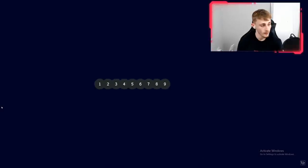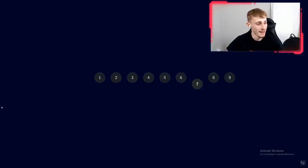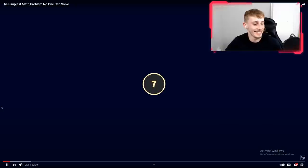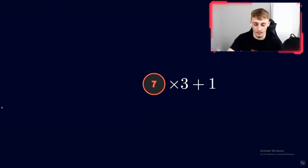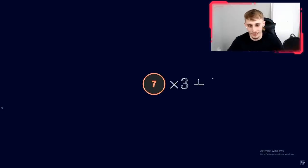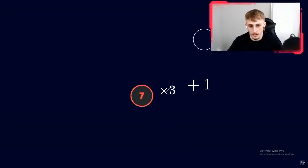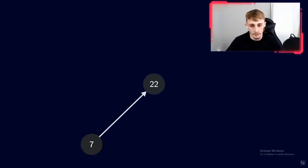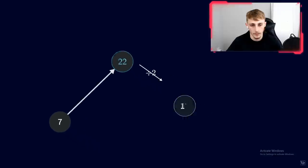Here's how it works. Pick a number, any number. Seven. Good choice. We're going to apply two rules. If the number is odd, we multiply by three and add one. So three times seven is 21, plus one is 22. If the number is even, we divide by two. So 22 divided by two is 11.